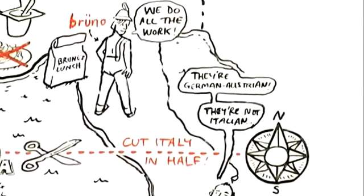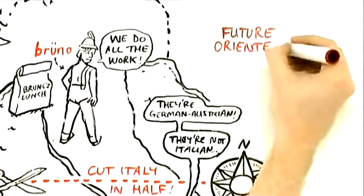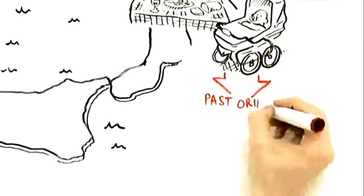It turns out, it is accurate. We've done research that says people in the North tend to be much more future-oriented. People in the South tend to be more past-oriented or present-hedonistic.